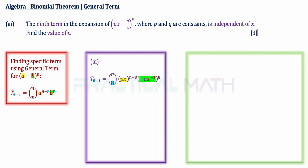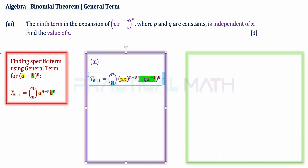In Step 1, Term 9 can be rewritten as T(8+1), so r = 8. Therefore nCr becomes nC8, a^(n-r) becomes (px)^(n-8), and b^r becomes (-q/x)^8, since r is 8. The negative q over x can be rewritten as -qx^(-1) using the negative indices rule.